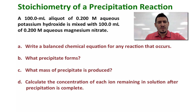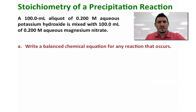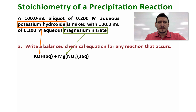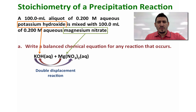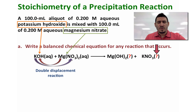Let's start by answering the first question: write a balanced chemical equation for any reaction that occurs. Since we are mixing potassium hydroxide and magnesium nitrate, we can write KOH (aqueous) plus Mg(NO₃)₂ (aqueous). This is going to be a double displacement reaction since Mg will go with OH and K will go with the nitrate. Therefore we get magnesium hydroxide Mg(OH)₂ plus KNO₃, which is potassium nitrate. But we need to write the balanced equation.